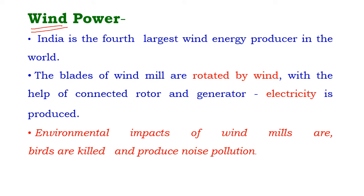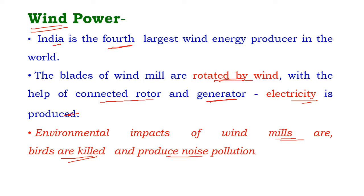Wind energy. India is the fourth largest wind energy producer in the world. The blades of a windmill are rotated by the action of wind with the help of a connected rotor and generator, producing electricity. The environmental impacts of windmills are: birds are killed when they fly through the windmill and are hit by the blades. Moreover, windmills always produce noise pollution in the surrounding area.